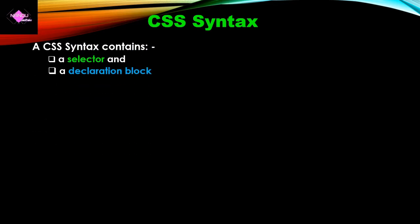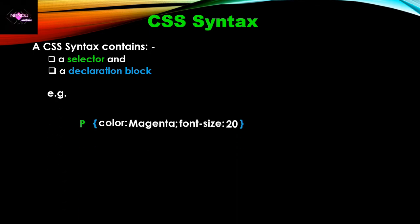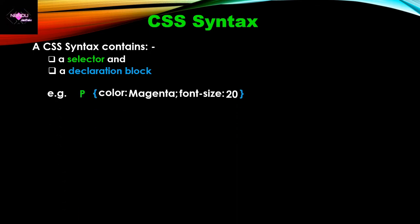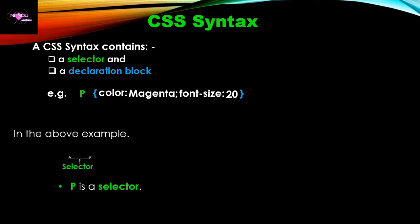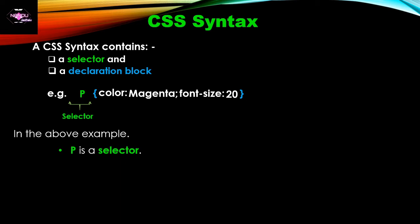Now we will see the syntax of CSS. The CSS syntax is mainly divided into two parts: first is the selector, and second is the declaration block. For example, 'p' with contents in curly brackets — here 'p' is the selector.